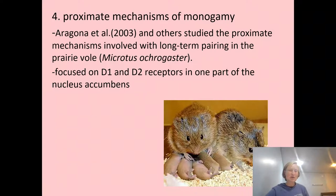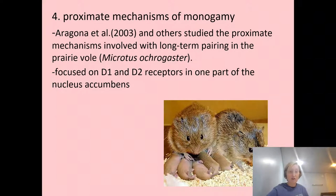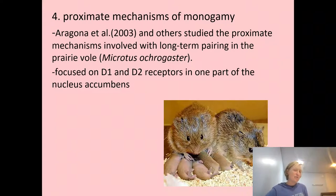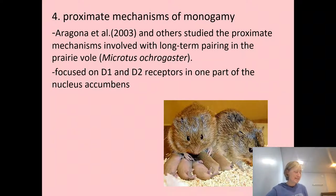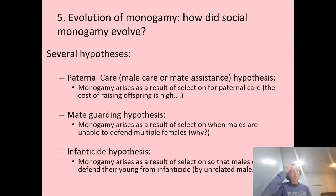This D1 activation may support monogamy by preventing the male from forming friendly relationships with other females. When researchers block D1 receptors, males are no longer aggressive toward stranger females and will affiliate and mate with them. So D1 receptor activation after pair bond formation seems important in maintaining the pair bond and monogamy.